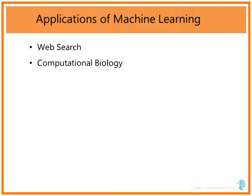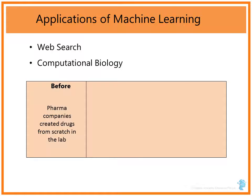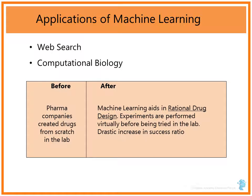Another aspect of Machine Learning is Computational Biology. Previously, big drug companies or pharmaceutical companies used to create drugs in the lab; however, this was a very slow, painful, and expensive process. Machine Learning helps a lot in drug design, which is known as Rational Drug Design. Millions of such experiments or designs can be done in computers using Machine Learning algorithms before they are tried out in the lab. This has been proved to be very helpful to big pharma majors.